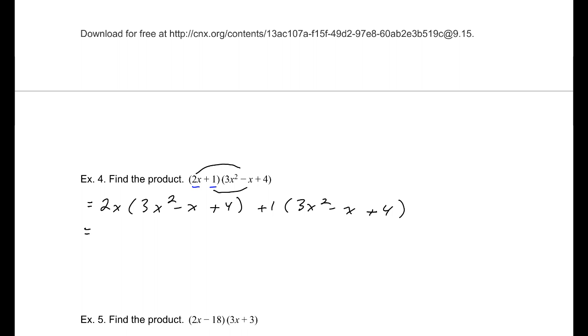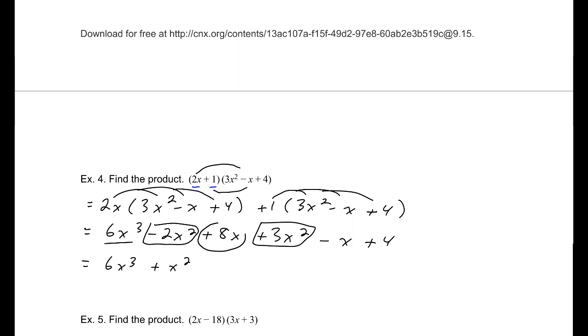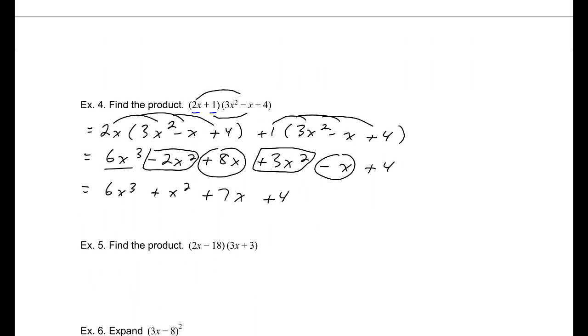I'm going to multiply 2x times all of this and I'm going to multiply 1 times all of this. Distributing, I will get 6x cubed minus 2x squared plus 8x and distributing 1 here, 3x squared minus x plus 4. Now, combining our like terms, like we did in the last couple of problems, 6x to the third. Now, we'll take these two. Adding those two, we get plus 1x squared. That'll be a plus 7x plus 4.